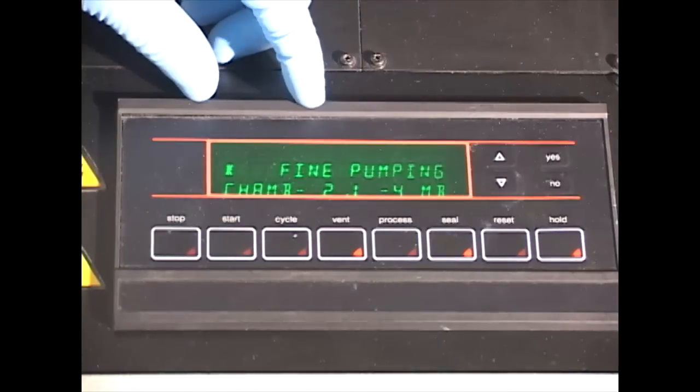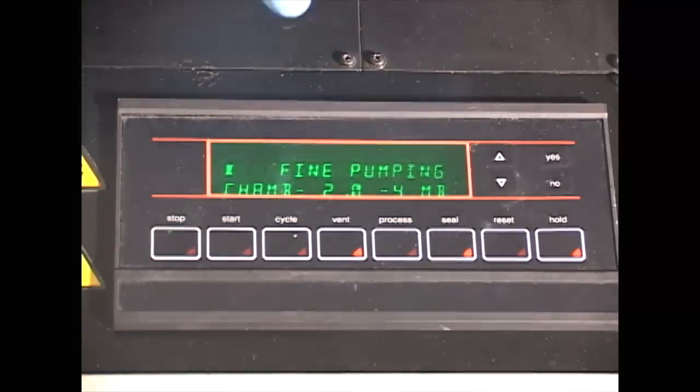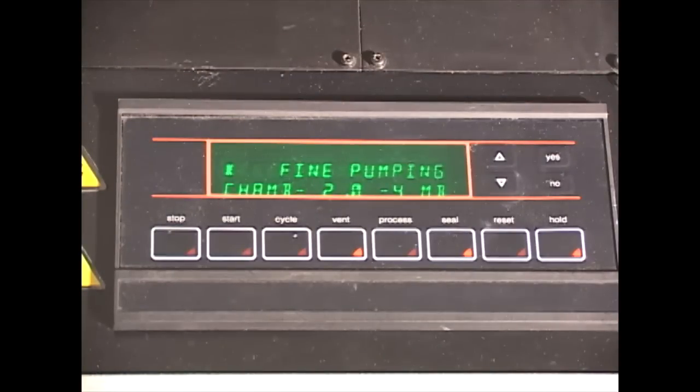We let the vacuum run until we approach 5 times 10 to negative 6 millibar. At this vacuum, we can have an excellent deposition material onto our substrate.